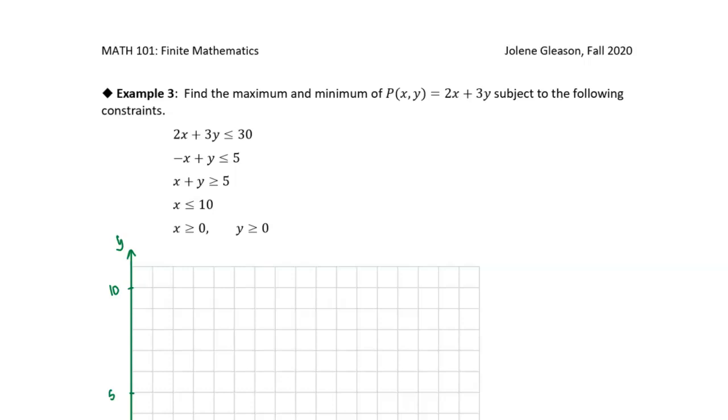All right, in this example we're back to a very abstract, no-context problem. We've got an objective function, and it tells us to find both the minimum and the maximum of this objective function. And we're given a bunch of constraints. So the first thing to do is just to graph the constraints.